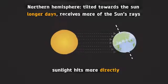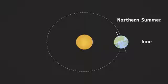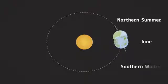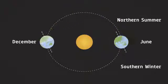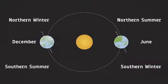This happens around June every year, when the northern hemisphere has summer and the southern hemisphere has winter. Conversely, around December, the northern hemisphere is tilted away from the Sun, thus experiencing winter.